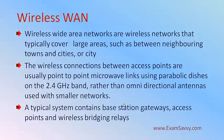Instead of omnidirectional antennas, we use parabolic antennas because omnidirectional antennas are useful for smaller networks, but for long distances we use parabolic antennas. This typically contains base station gateways and access points, because we need to transmit from one town to another. It will contain base station gateways, access points, and bridging relays for proper communication to avoid any loss of information.